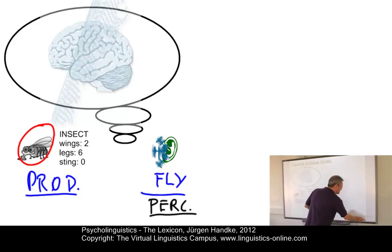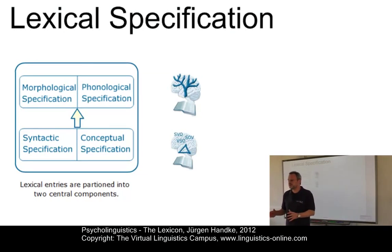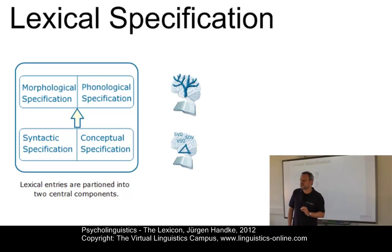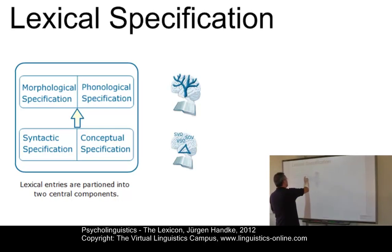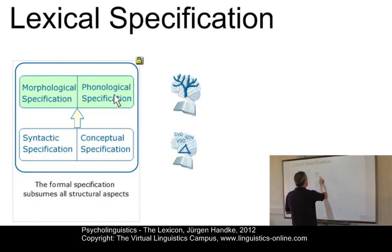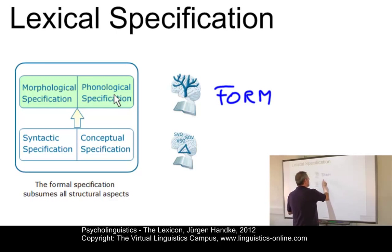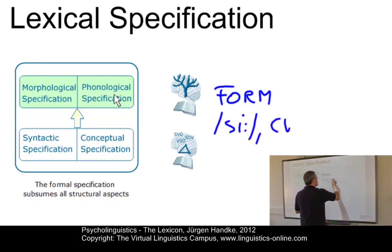Let's now look at the lexical specification. When we produce language, we retrieve items from the lexicon on the basis of a pre-generated conceptual structure, and this conceptual structure has to be filled with actual words. Many psycholinguists argue that the structure of lexical entries can be differentiated into two parts. The first part is the form, and this formal representation includes phonological and morphological information — for example, SEE and its syllable structure — as well as the fact that SEE is a verb.